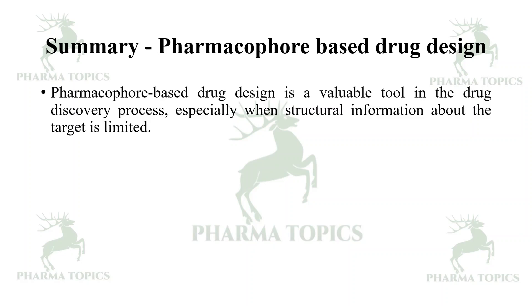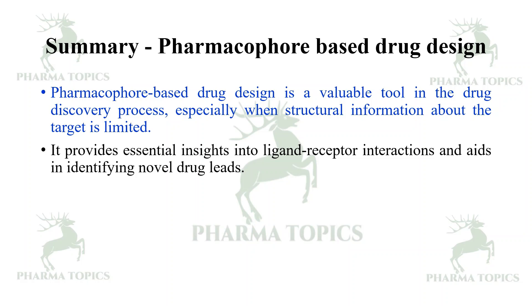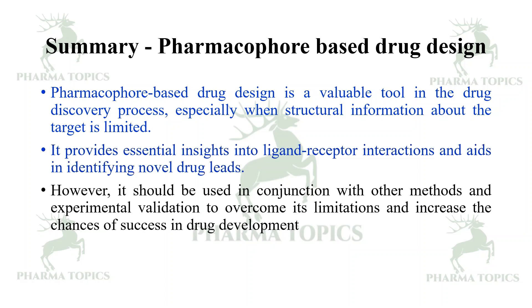There is also a limitation in the ability to rank and prioritize the binding affinity prediction of potential drug candidates. In summary, pharmacophore based drug design is a valuable tool in the drug discovery process, especially when structural information about the target is limited. It provides essential insights into ligand-receptor interactions and aids in identifying novel drug leads. However, it should be used in conjunction with other methods and experimental validation to overcome its limitations and increase the chances of success in drug development.